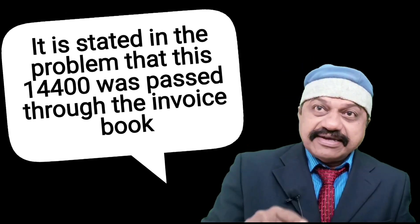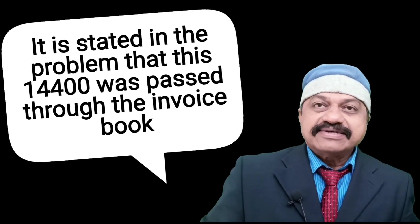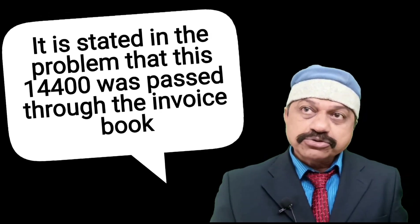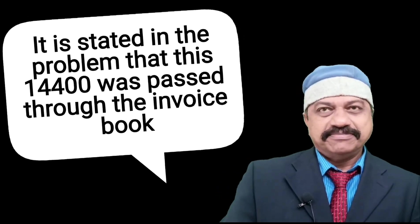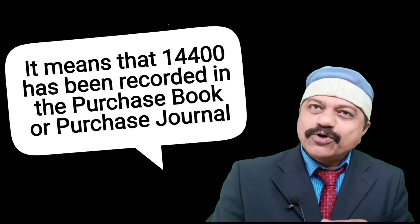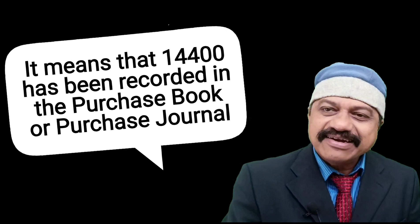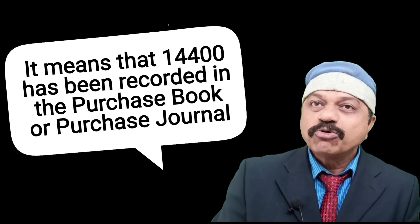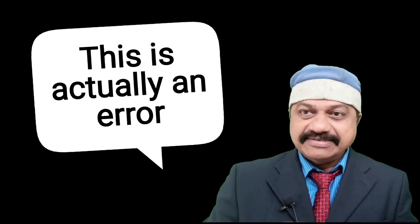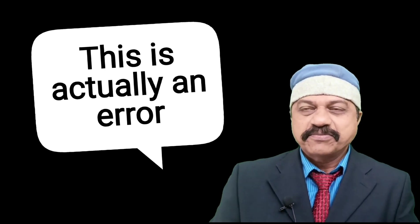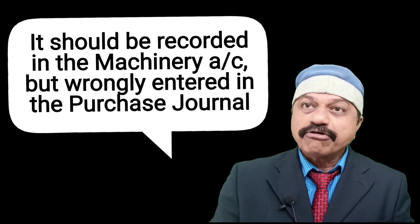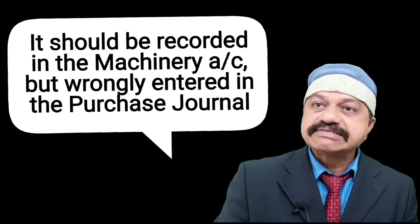It is stated in the problem that this balance of 14,400 was passed through the invoice book. It means that 14,400 has been recorded in the purchase book or purchase journal. This is actually an error — it should be recorded in the machinery account, but by mistake it stands debited in the purchase journal.